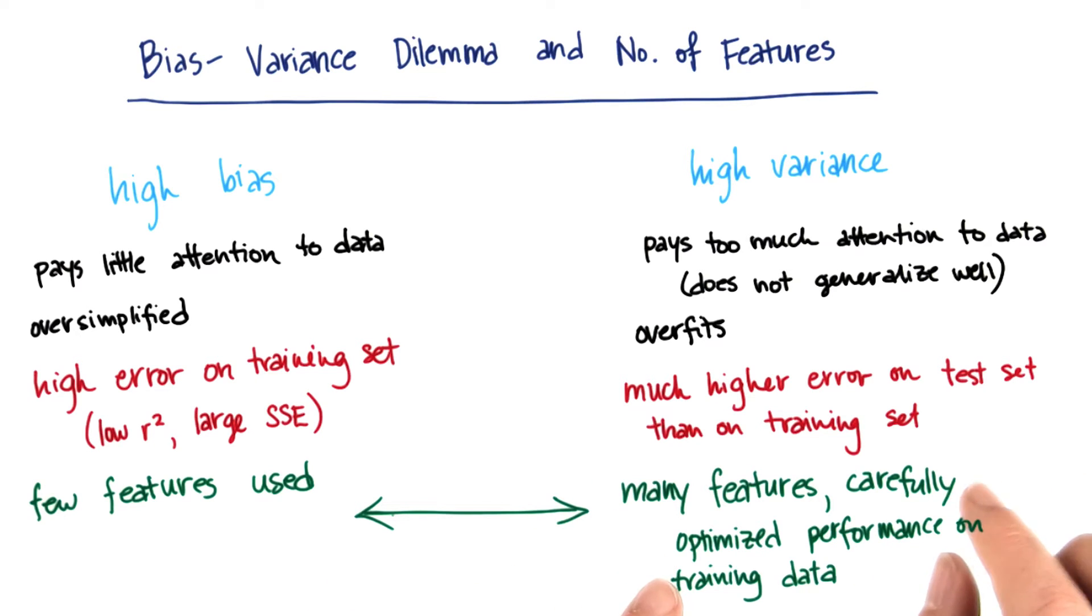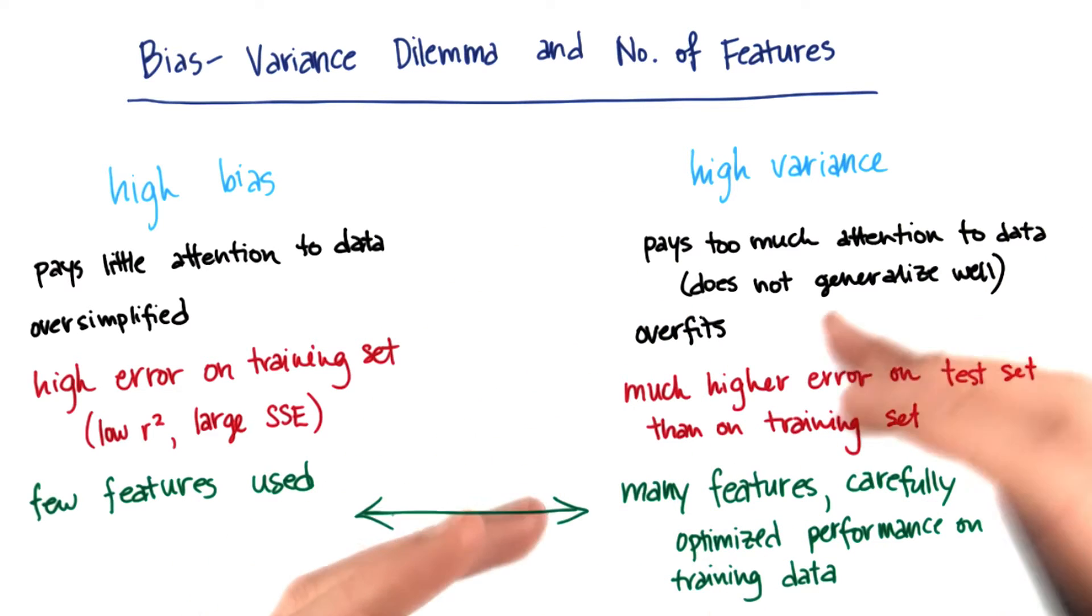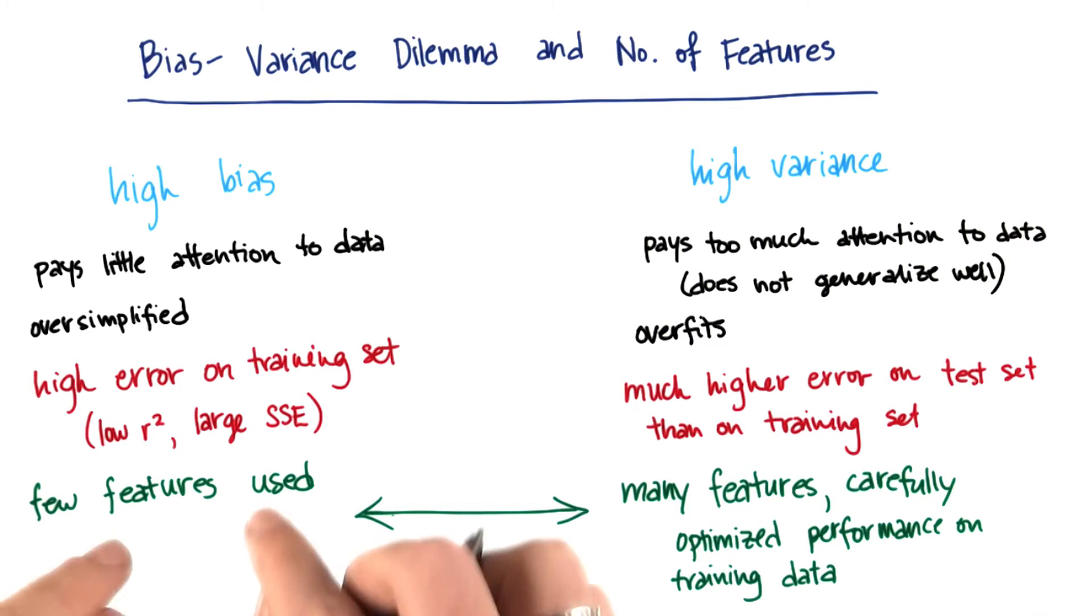You want to have the accurate description that comes with having enough variance to your model. You want it to be able to fit to your data in an accurate and true way, but you want to do it with the minimum number of features that's needed to do that.